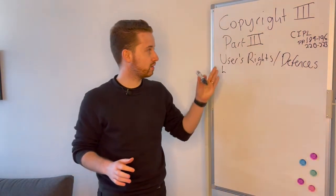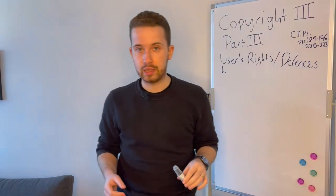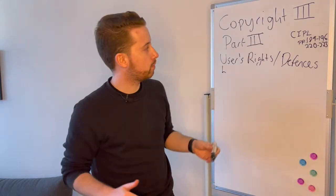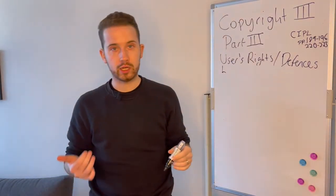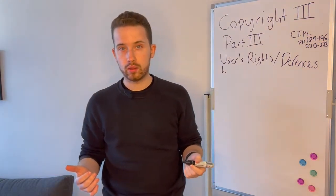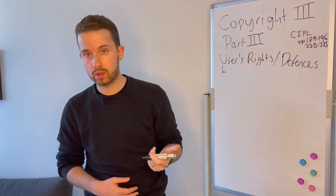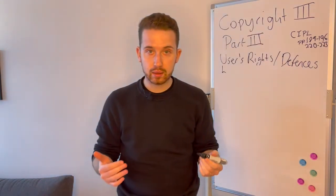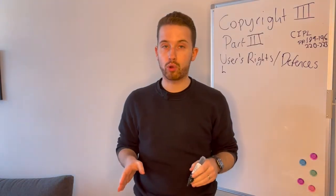Welcome back, we're almost done. This is copyright part three, and we're in the textbook at pages 189 to 196 and 220 to 223. We're going to finish up the main users' rights and defenses. We looked at freedom of expression and the public interest, then at the educational institutions, libraries, and museums exception, and the common carrier exception. Now we'll look at the fair dealing exception, which we've already discussed quite a bit, and then move on to moral rights.